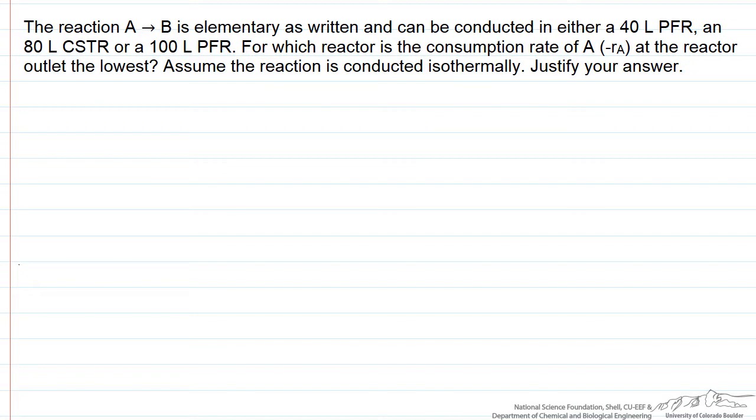This is a brief conceptual exam problem dealing with an elementary reaction: A goes to B, a simple isomerization reaction that can be conducted in one of three reactors - different types of PFR and CSTR reactors. We want to know in which case the consumption rate of A at the reactor outlet is lowest.